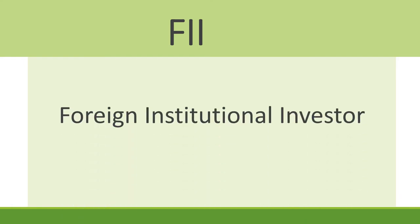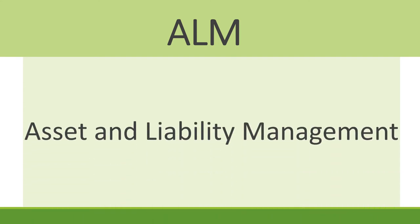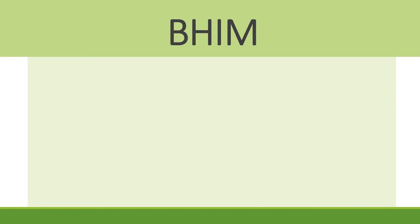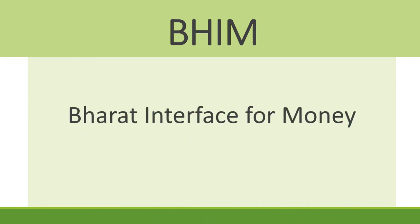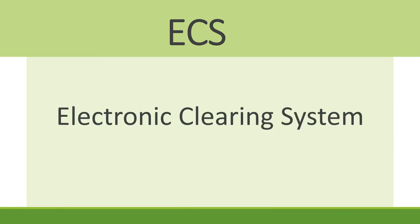The next term is FII. The full form of FII is Foreign Institutional Investor. The next term is FDI. The full form of FDI is Foreign Direct Investment. The next term is ALM. The full form of ALM is Asset and Liability Management. The next term is BHIM. The full form of BHIM is Bharat Interface for Money. The next term is NPCI. The full form of NPCI is National Payment Cooperation of India. The next term is ECS. The full form of ECS is Electronic Clearing System.